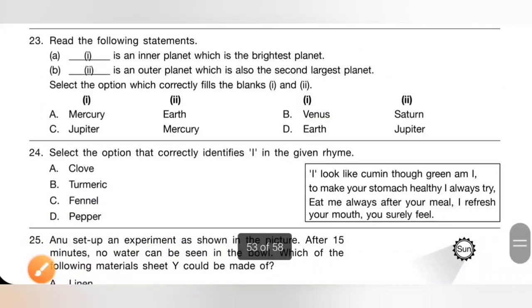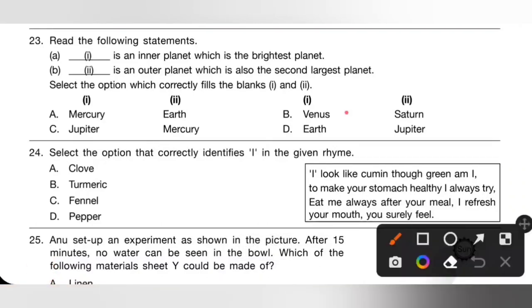Question 23: Read the following statements. Statement 1: Blank is an inner planet which is the brightest planet — that is Venus. Statement 2: Blank is an outer planet which is also the second largest planet — that is Saturn. Option B correctly fills both blanks and is the correct answer.